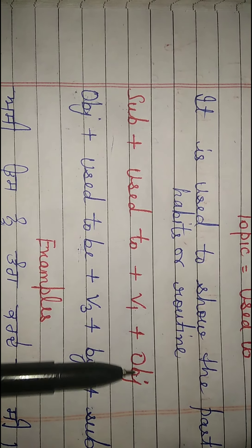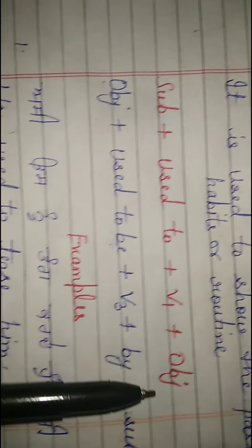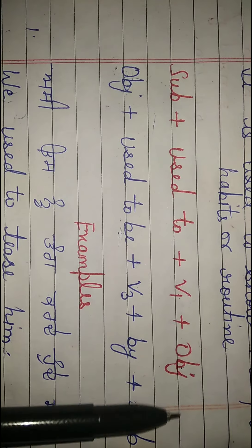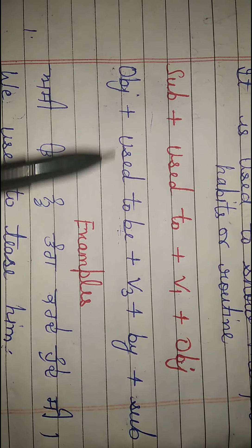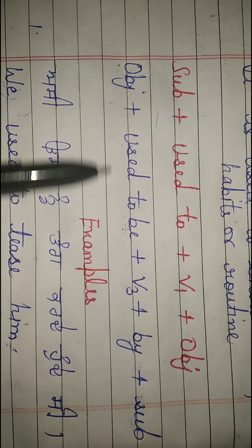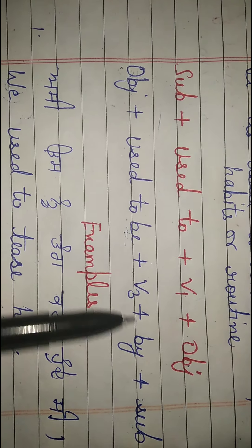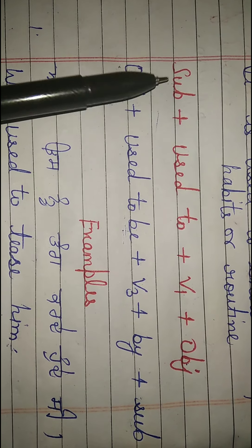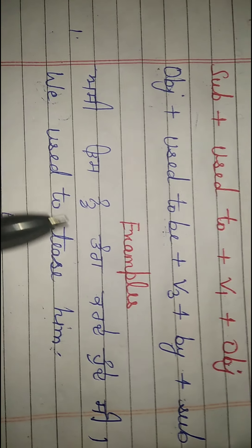The passive structure starts with the object. The active object becomes the subject of the passive. The verb changes to the third form, and the original subject follows.